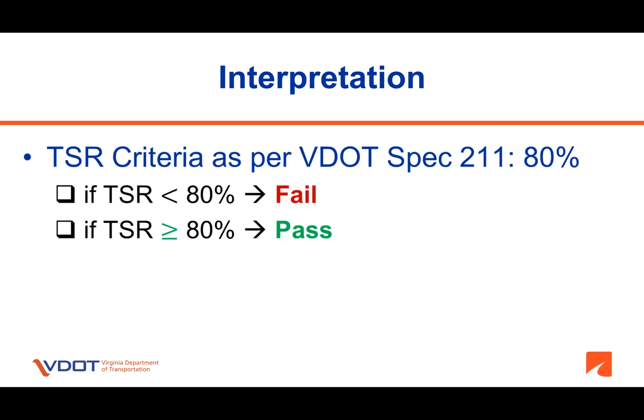VDOT SPEC requires a TSR value of at least 80% for asphalt mixtures to be considered resistant to moisture-induced damage. If the TSR ratio is less than 80%, that means the mixture is moisture-susceptible and fails to meet VDOT SPEC criteria. If the TSR ratio is 80% or more, that means the mixture is moisture-damage resistant and passes the VDOT SPEC criteria.